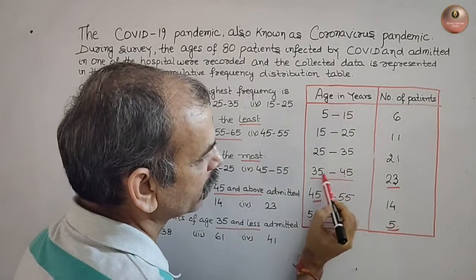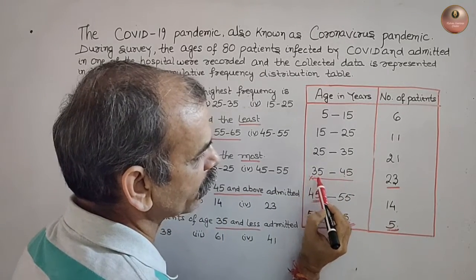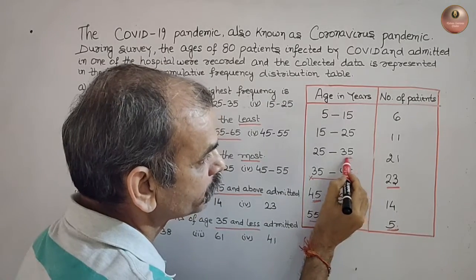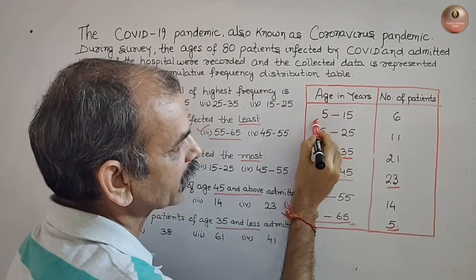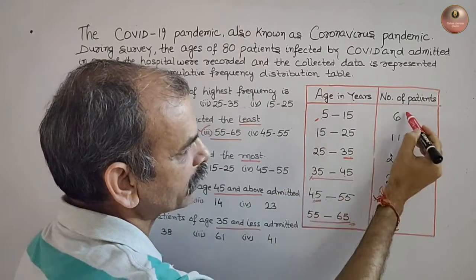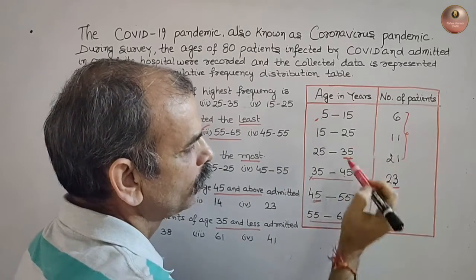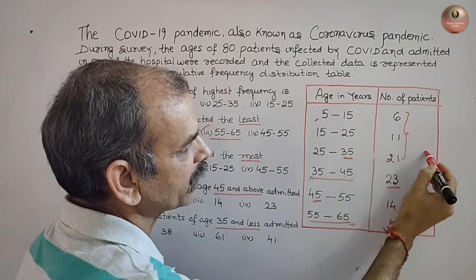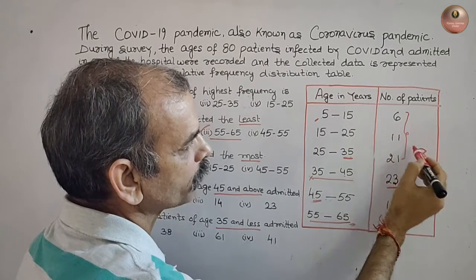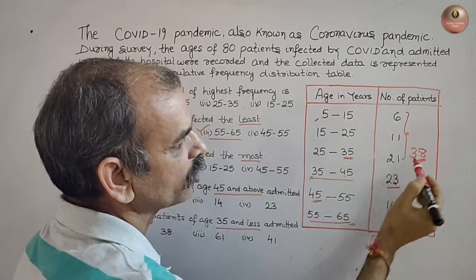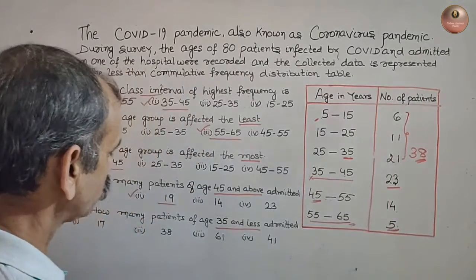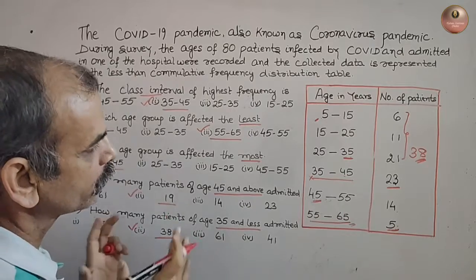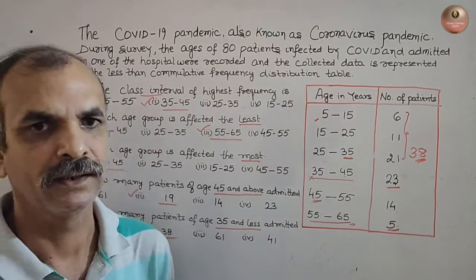Now, how many patients are of age 35 and less? 35 and less — we do not count the 35 to 45 group. So up to 35, that means add these three values: 6 plus 11 is 17, 17 plus 21 is 38. So 38 is your correct answer.